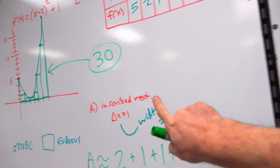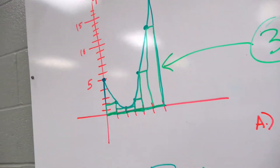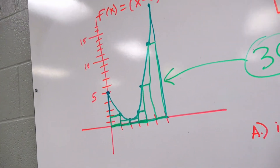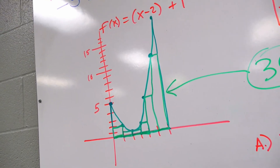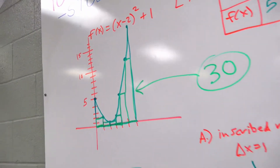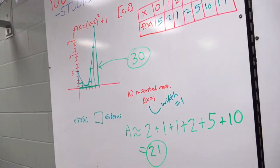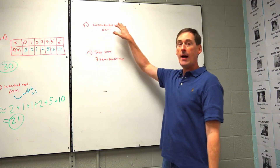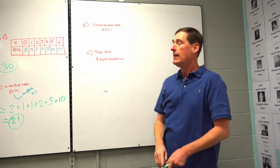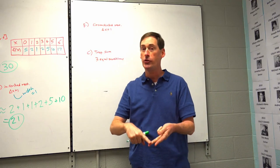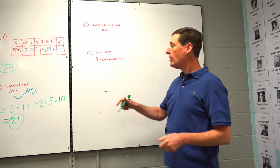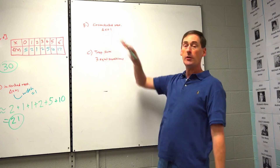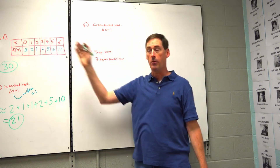Does anybody know what would be better than doing six inscribed rectangles? Maybe doing 10, 15, 20, or 100 inscribed rectangles might be a little bit better. The more rectangles you squeeze in there, the better you match the shape. So now we proceed to circumscribed rectangles with delta x equals 1 — developed by Archimedes. Inscribed means it fits inside the parabola. Circumscribed means it fits over top of the parabola.